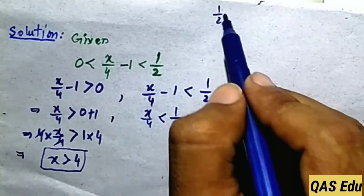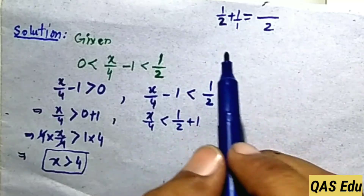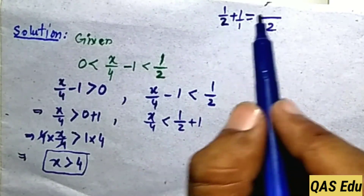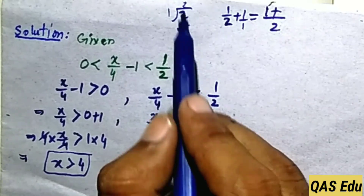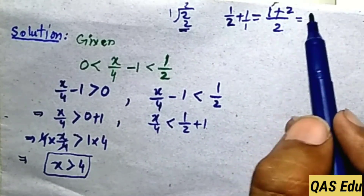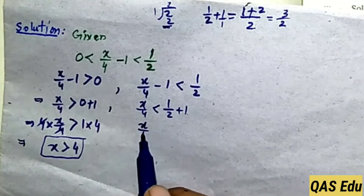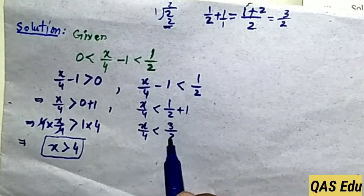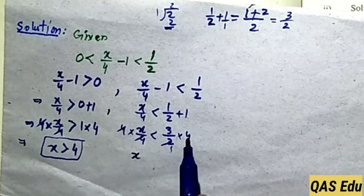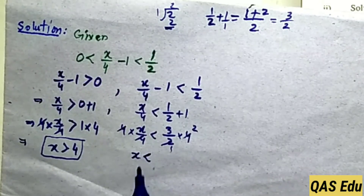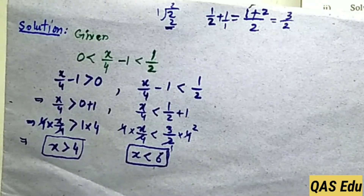For x/4 minus 1 is less than 1/2: move minus 1 to the right as plus 1. So 1/2 plus 1 equals 3/2. Then x/4 is less than 3/2. Multiply both sides by 4: 4 and 2 cancel to give 2, and 3 times 2 equals 6. So x is less than 6. Now show both statements on the number line.